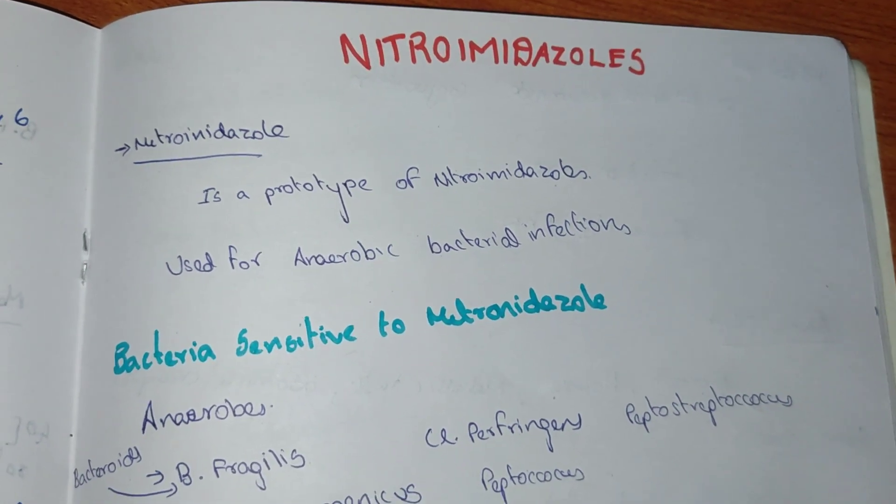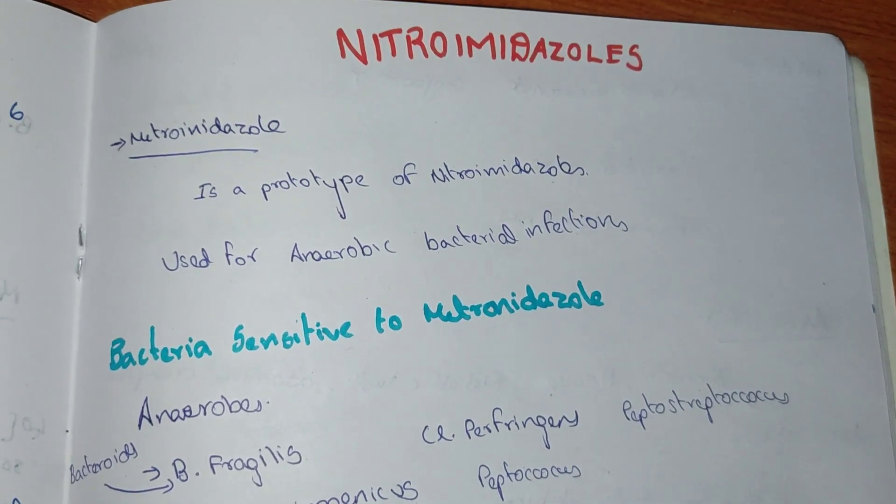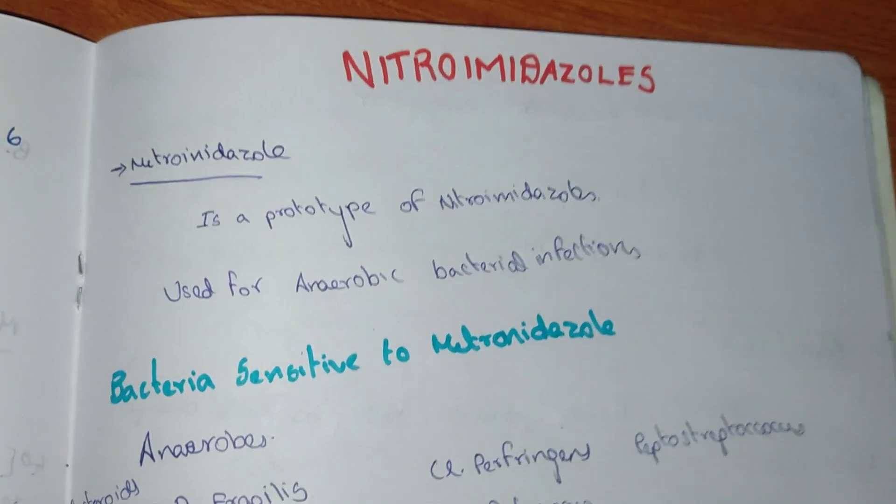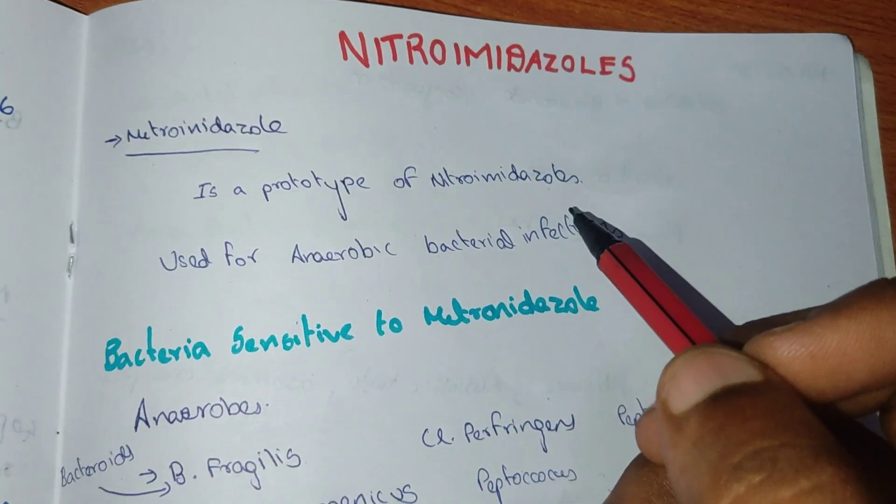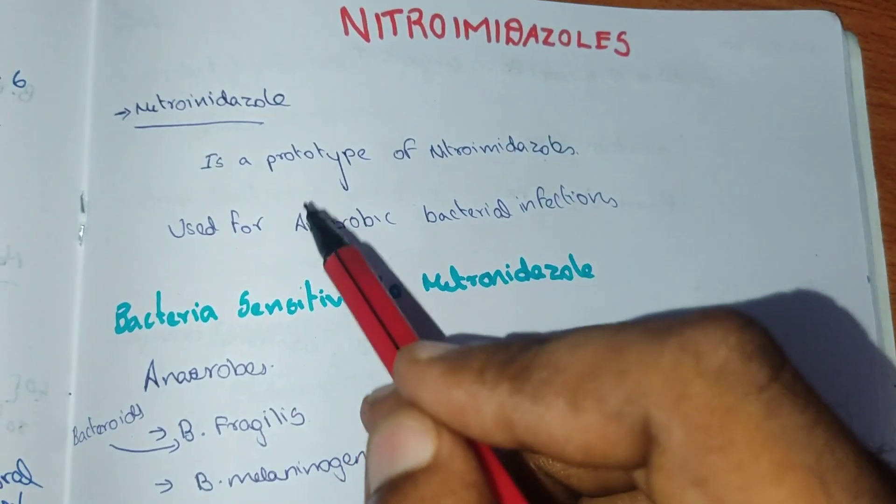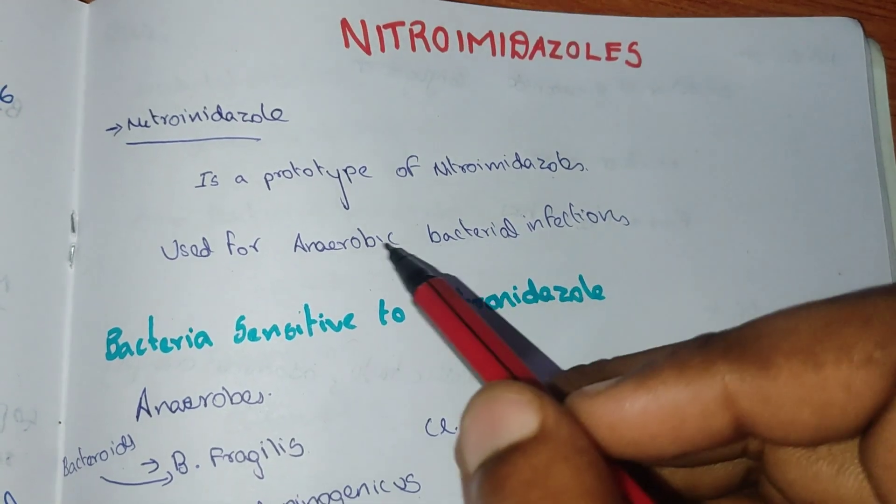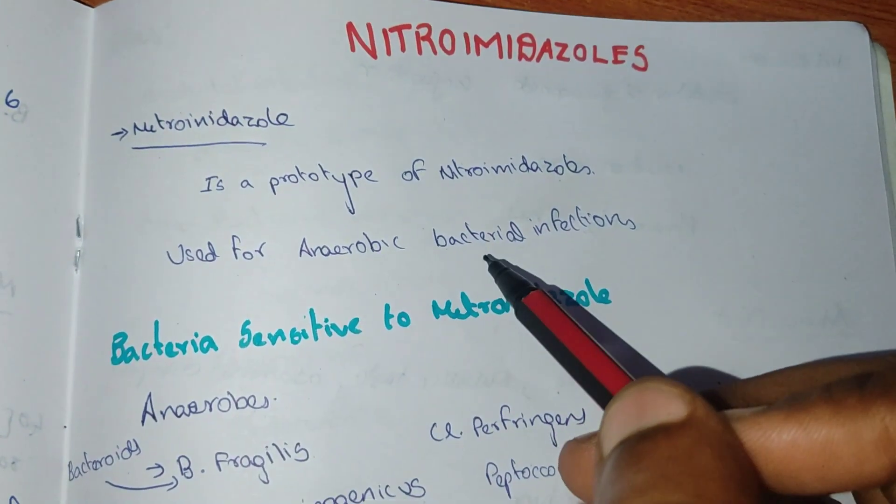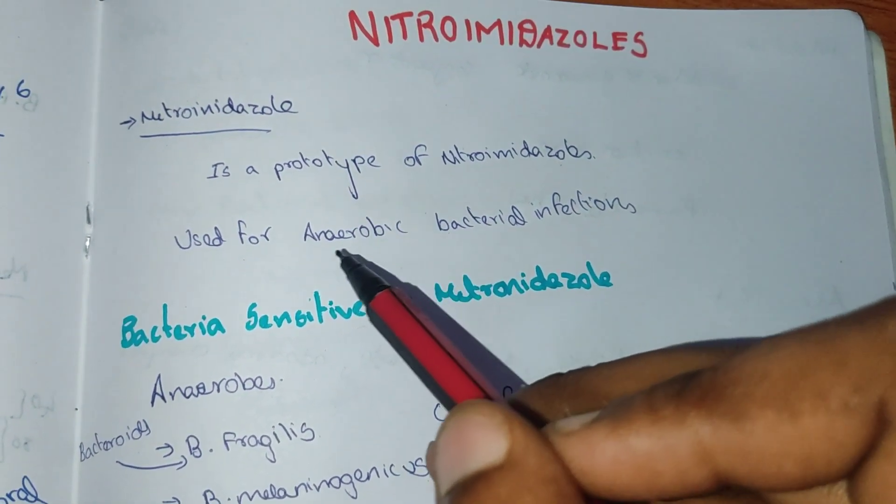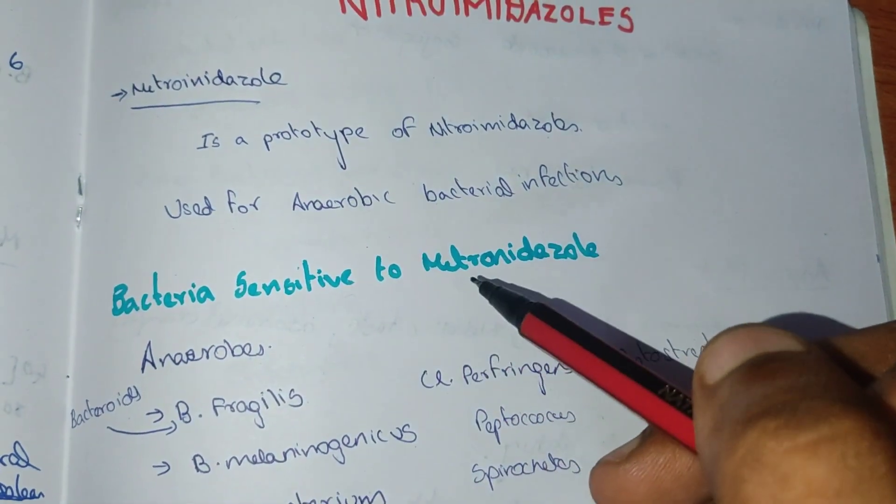Hi everyone, welcome to Medicine Not YouTube channel. In this video we are going to see about nitroimidazoles. The prototype of nitroimidazoles is metronidazole, which we are going to discuss here. It is used for anaerobic bacterial infections - these are bacterial infections which don't need oxygen. The bacteria sensitive to metronidazole include anaerobes.